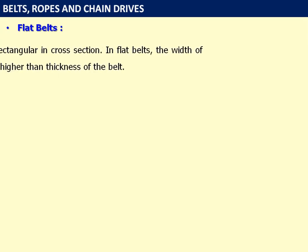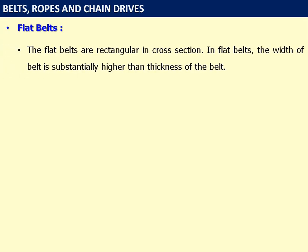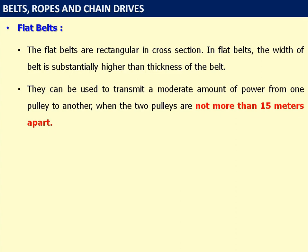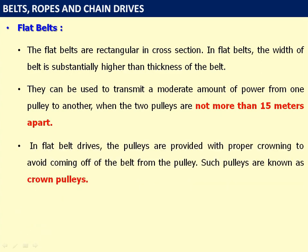Flat belts are rectangular in cross-section. In flat belts, the width of the belt is substantially higher than the thickness. They can be used to transmit a moderate amount of power from one pulley to another when the two pulleys are not more than 15 meters apart. In flat belt drives, the pulleys are provided with proper crowning to avoid the belt coming off the pulley. Such pulleys are known as crowned pulleys.